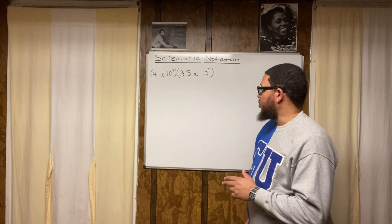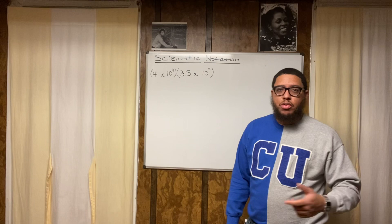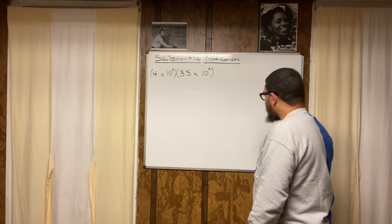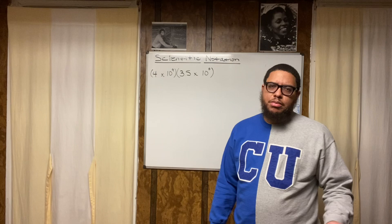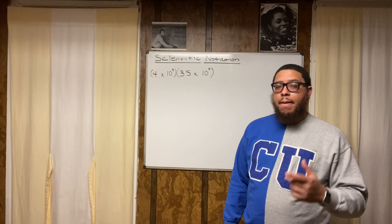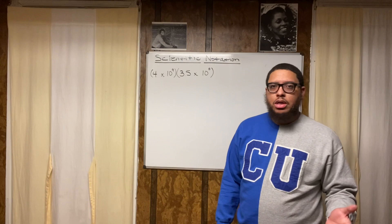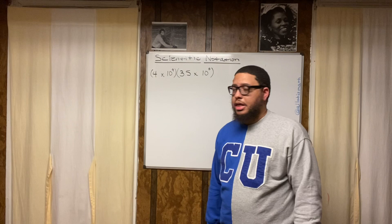So we have 4 times 10 to the ninth power and we also have 3.5 times 10 to the eighth power. If we understand the exponent rules — because scientific notation and exponent rules go hand in hand — that's why a lot of times in Algebra 1 or Algebra 2, when you learn about the exponent rules, you may also in that same section of the textbook do some problems on scientific notation, because the rules are basically the same, or there's a lot of overlap.